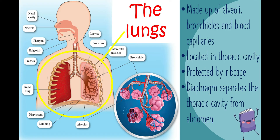The lungs are made up of bronchioles, alveoli, and blood capillaries. The lungs are located in a space called the thoracic cavity. The lungs are protected by the ribcage, which consists of ribs and intercostal muscles. A sheet of muscle called the diaphragm separates the thoracic cavity from the abdomen.